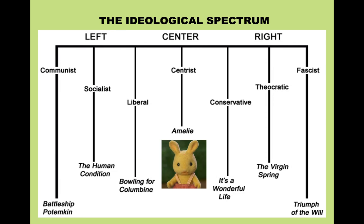As we move towards the center, we have some of our actual ideologies that we have in this country — liberal on the left, conservative on the right. As liberals tend to call conservatives theocrats or fascists, and conservatives call liberals socialists, you can see how those things relate to each other, moving slightly more to the left and slightly more to the right.